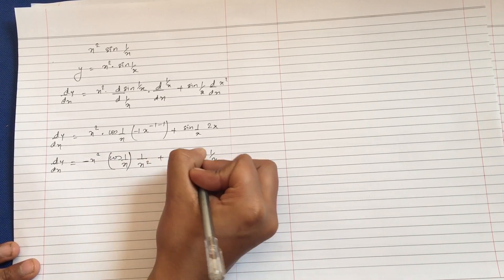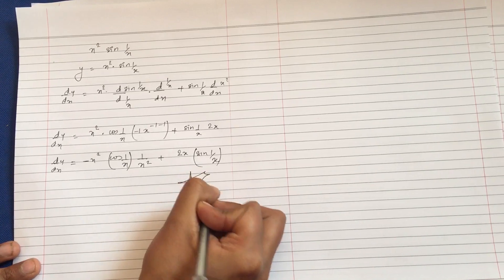So this equals minus cos(1/x) divided by x squared, plus 2x sin(1/x). This is the answer. This is the total answer that we got. So this is all about it, thank you so much.